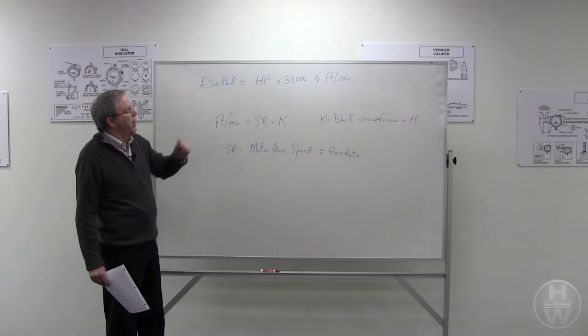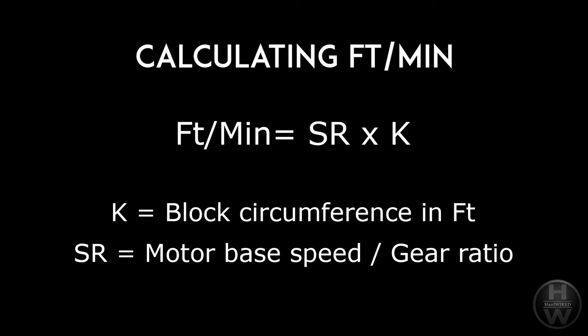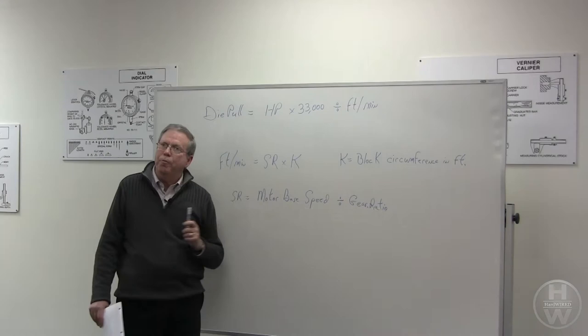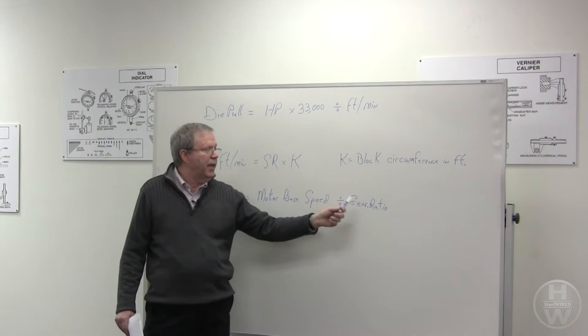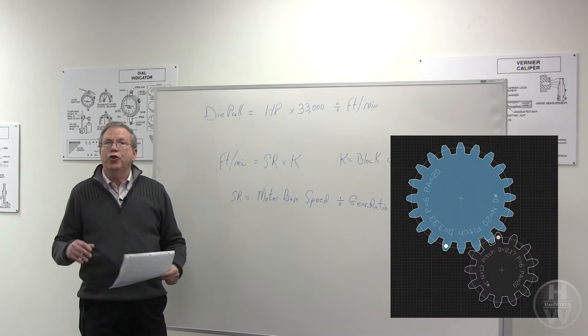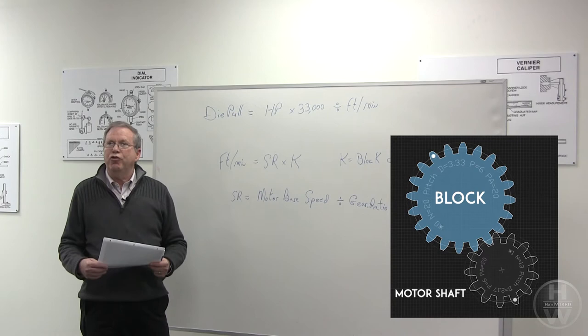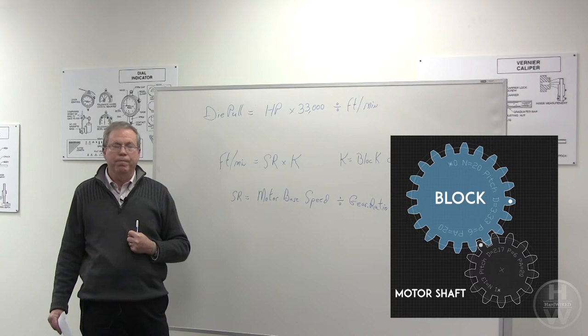So to calculate feet per minute, we're going to use the following equations. Feet per minute equals shaft revolutions times K, where K is the block circumference in feet. Shaft revolutions is motor base speed, and again motor base speed can be obtained from the motor base plate divided by gear ratio. And to calculate gear ratio, we simply turn the motor shaft by hand calculating the number of revolutions it takes to make the block turn one complete revolution.